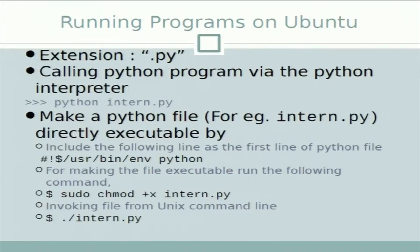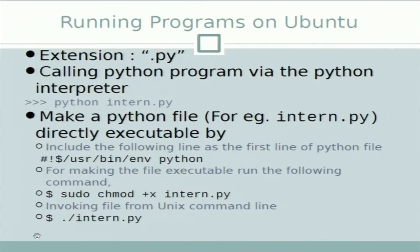For making a Python file directly executable, we have to include a shebang line as the first line: '#!/usr/bin/env python'. Then we have to make the file executable. In Linux or Ubuntu we do that with 'sudo chmod +x inton.py', and then we can invoke the file with './inton.py'.